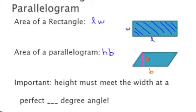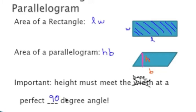An important note about height and base: don't think of height as simply up and base as bottom, because that will get you in trouble with geometric formulas. Instead, think of the height and base as two measurements that must meet at a perfect 90-degree angle — a perfect corner — just like in a rectangle.